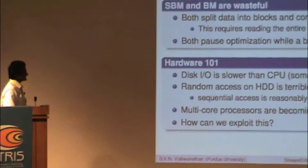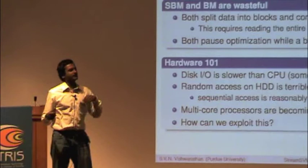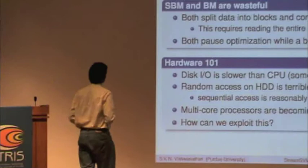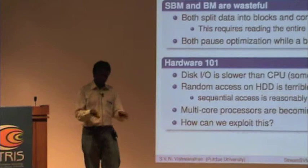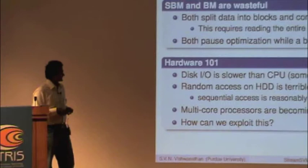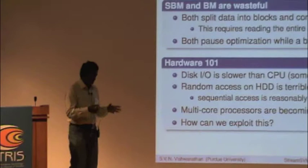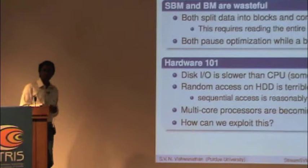But there are a few observations. So both selective block minimization and block minimization that I talked about, they are wasteful. Because when you are loading data from disk, you are not training, and when you are training, you are not loading data from disk. And so this is one big problem. The other thing is, of course, before even beginning training, they want to take all the data, they want to split it into pieces, and then they want to compress these pieces. And that is also problematic, because you have to read the data once, and what if your data is terabytes. This is very expensive. And of course, the issue is that disk I/O is always slower, and the CPU is always faster. And random access on a disk is terrible. So you really want to always be doing sequential access, and you want to take advantage of multi-core processes.